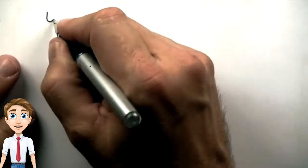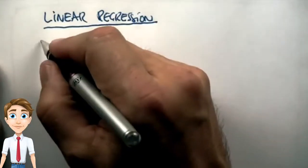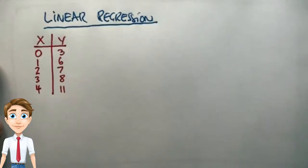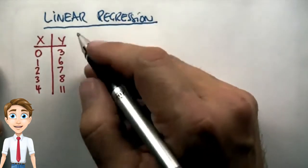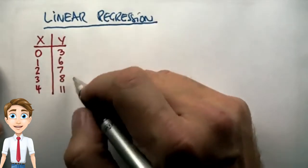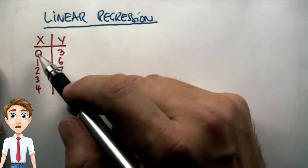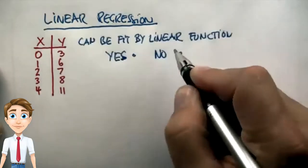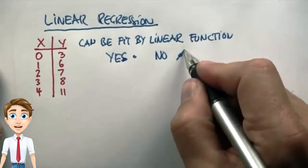In this question I quiz you about linear regression given the following data. My first question is can this data be fit exactly using a linear function that maps from x to y? Yes or no? And the answer is no.